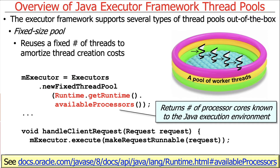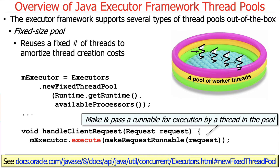You can give whatever number you want to control the number of threads, but a good idea is to pick something related to the number of cores on your machine. This particular call will make the number of threads in the fixed thread pool equal to the number of cores. When there's work to do — a request from some client — we simply create a Runnable and tell the executor to execute that request. It puts the request in a queue and processes it when one of the threads in the pool becomes available, just like the call center example we talked about.